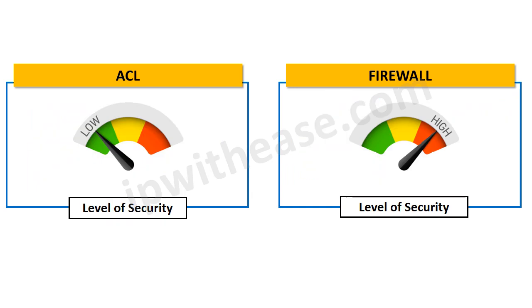Moving to the security provided by each: ACL provides limited and low security when compared to a firewall, which operates up to layer 7 and is tailor-made to address challenges of security vulnerabilities and attacks.